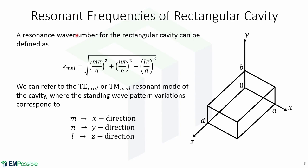Now we can define a resonance wave number. For the rectangular cavity, it is defined by this expression: square root of (mπ/a)² plus (nπ/b)² plus (lπ/d)². We can refer to the TEmnl or TMmnl resonant mode of the cavity, where the standing wave pattern variations correspond to the x direction given by m, the y direction given by n, and the z direction given by l.